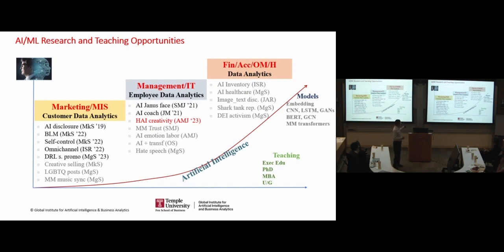For example, in my center, we started with customer data analytics. Back in the days, we talked about AI chatbot disclosure, that's a marketing science publication. And then now we use machine learning algorithms to detect social media posts on Instagram and Twitter that are really BLM related. We use BERT model to predict social media topics. And also we have another project on LGBTQ, similar ideas.